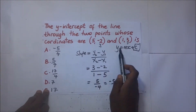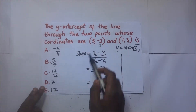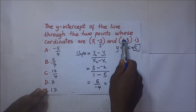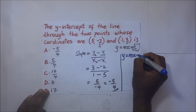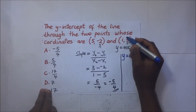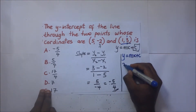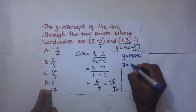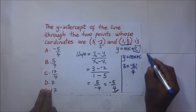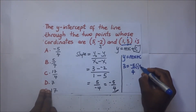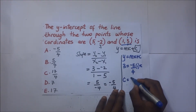To find the value of c, we substitute into y = mx + c using one of the points. Picking point (1, 3): y = 3, gradient m = negative 5 over 4, x = 1, plus c. Making c the subject gives c = 3 plus 5 over 4.